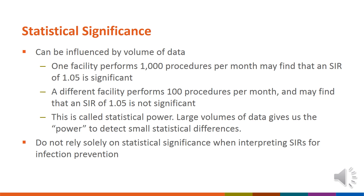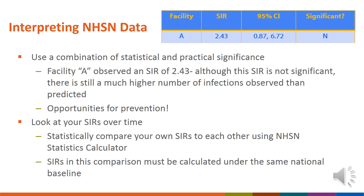Statistical testing, although very useful, may not paint a complete picture of your facility's performance. Statistical values such as the 95% confidence interval are highly influenced by sample size or exposure volume. A facility that performs 1,000 procedures a month may find an SIR of 1.05 significant, whereas a facility that only performs 10 procedures a month may find the same SIR value to be not significant. This is called statistical power — the ability of the statistical test to detect significant differences. Often, facilities with low exposure volume may never obtain a statistically significant SIR. Even if the SIR is not statistically significant, there may still be opportunity for infection prevention. We recommend using a combination of statistical and practical significance to make infection prevention decisions.